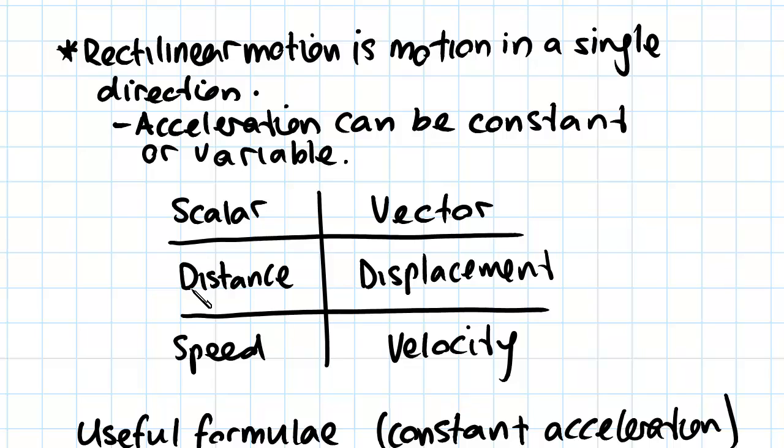So distance is just a scalar quantity whereas displacement is a magnitude and a direction. Likewise for velocity it's a magnitude and a direction whereas speed is just a magnitude.